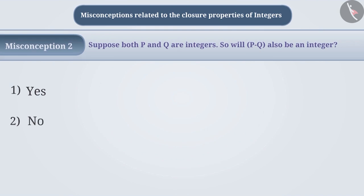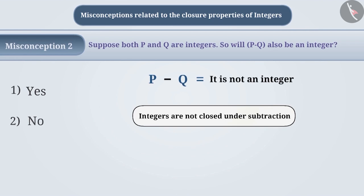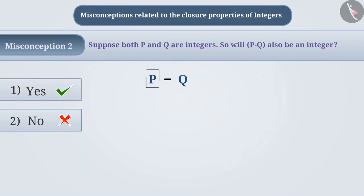Sometimes, there is a misconception that the integers are not closed under subtraction, so it is assumed P minus Q cannot be an integer. With this understanding, children choose option 2, which is the wrong answer. The correct answer here is option 1, because the result obtained by subtracting any two integers is an integer.